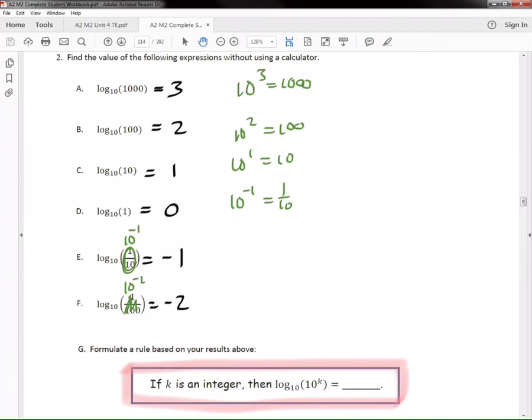I could have taken this thousand out and wrote 10 to the third. So, people, what would this be? Log base 10 of 10 to the K, what would that equal? Not X.